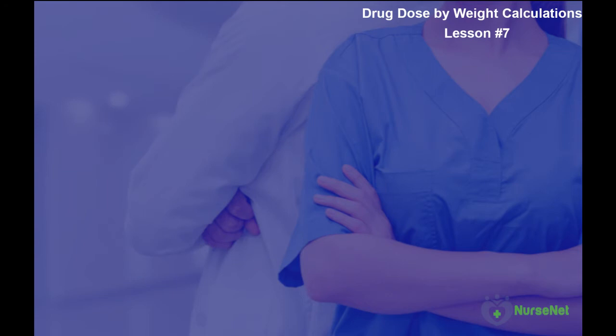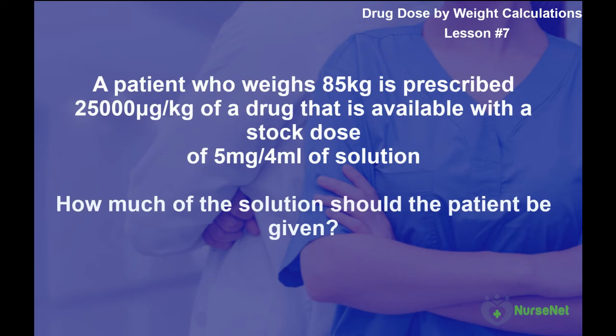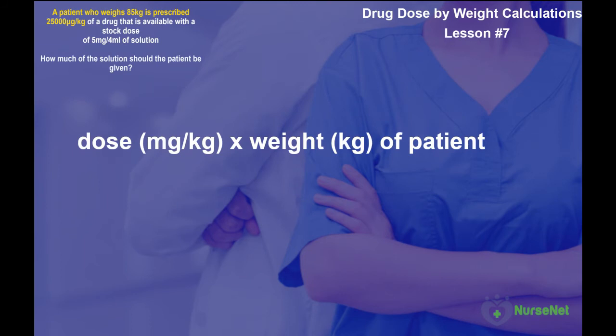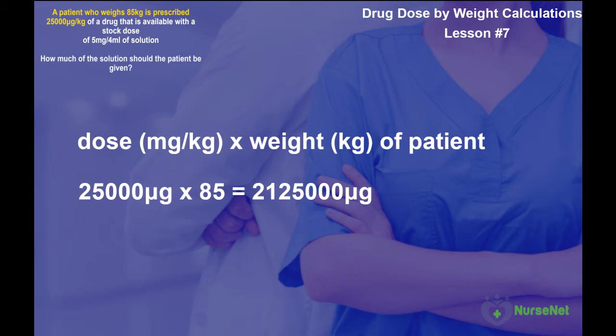Let's do another example — this time we'll need to consider conversion of metrics. A patient who weighs 85 kilograms is prescribed 25,000 micrograms per kilogram of a drug that is available with a stock dose of 5 milligrams in 4 millilitres of solution. How much of the solution should we give the patient? Breaking into two parts: using dose per kilogram multiplied by patient weight, that's 25,000 micrograms per kilogram multiplied by 85 kilograms, which gives us 2,125,000 micrograms.